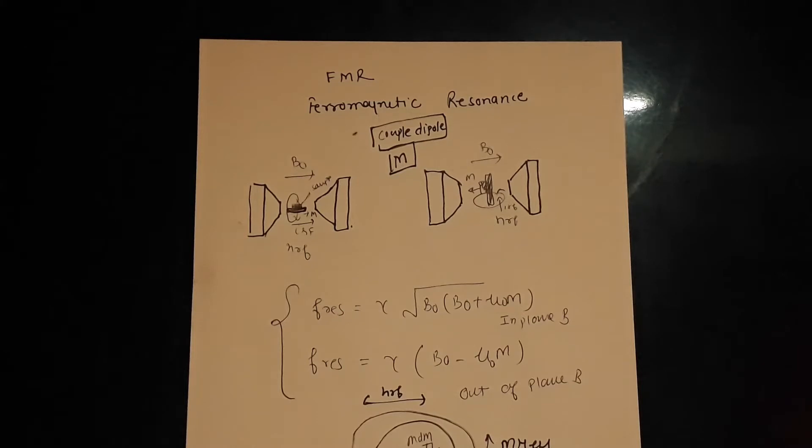In ferromagnetic resonance, instead of a single spin you have a whole magnetization. The magnetization comes from ferromagnetism in the system arising due to strong interactions in the material, where all the spins are aligned in a particular fashion due to strong interactions.